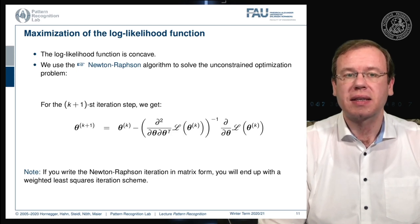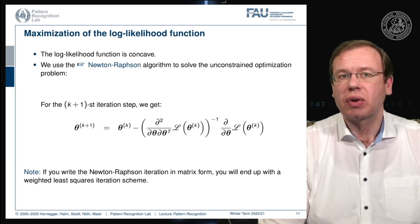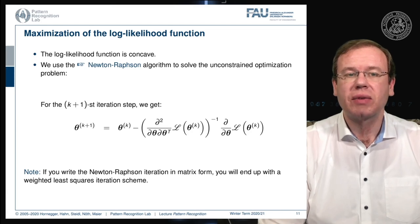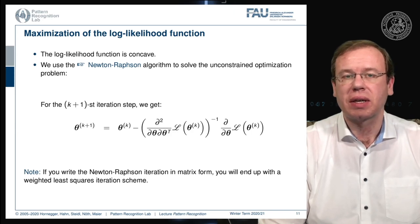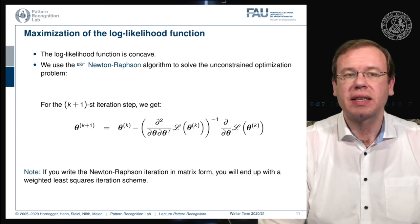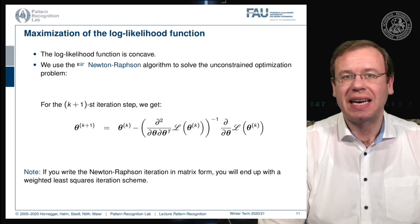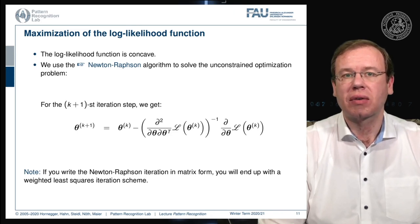If you want to apply this algorithm, you can see that we can get parameter updates simply by starting with a certain initial configuration for theta and then doing updates on theta. So let's say we are in iteration k, then we get the updated version theta k+1 by computing the inverse of the Hessian matrix of our log likelihood function times the gradient of the log likelihood function with respect to our parameter vector theta.